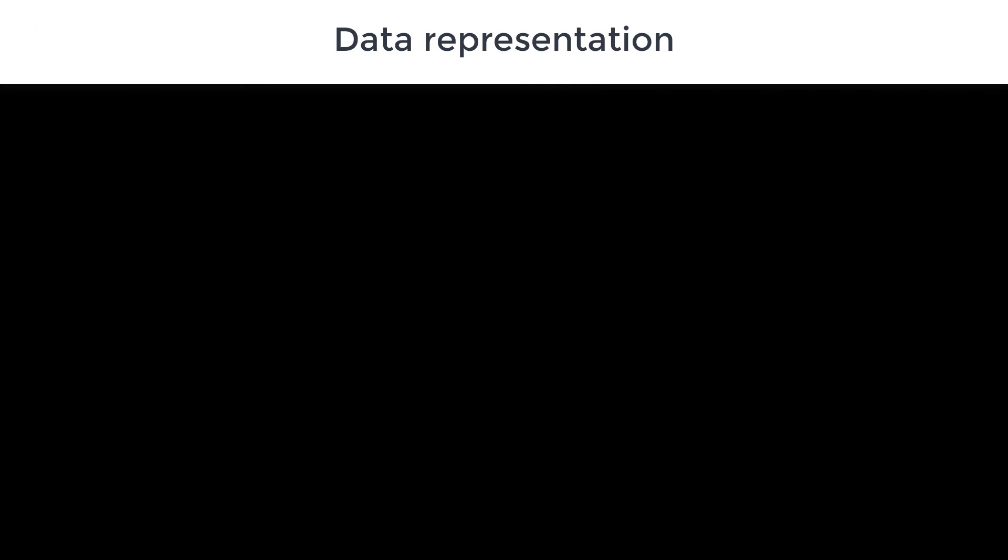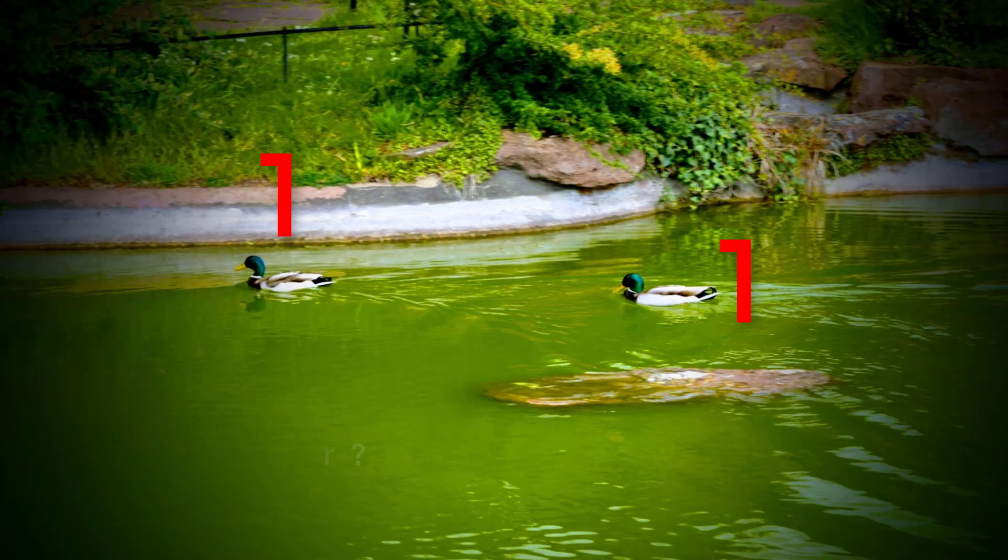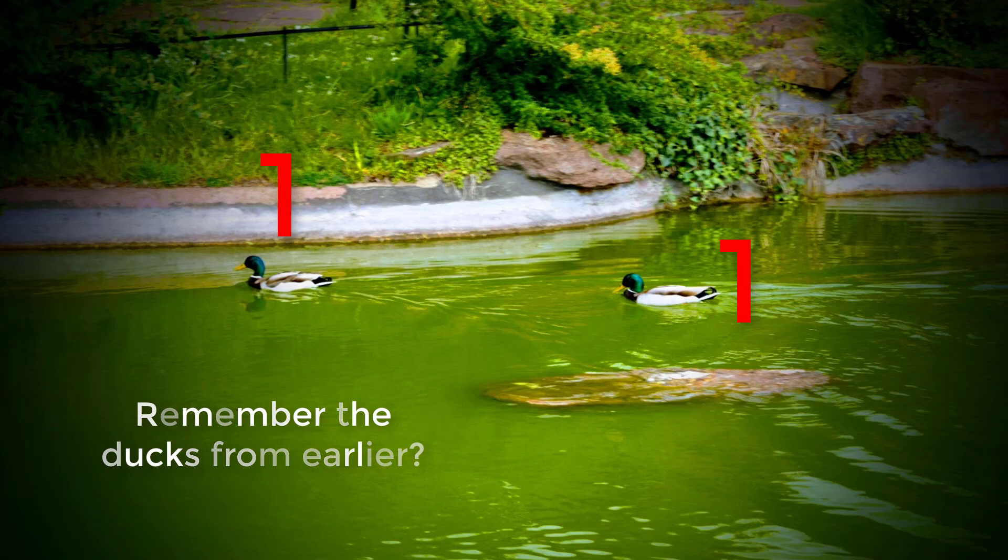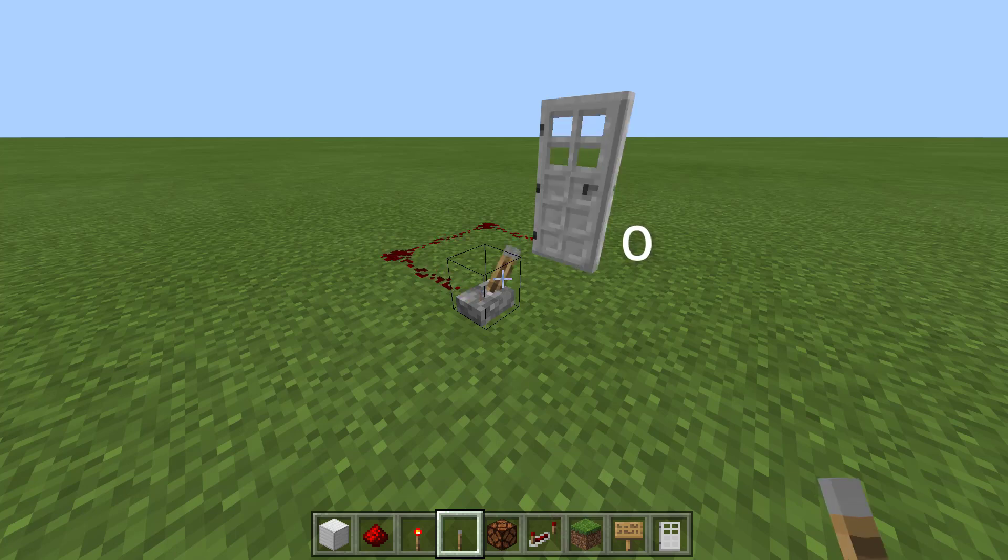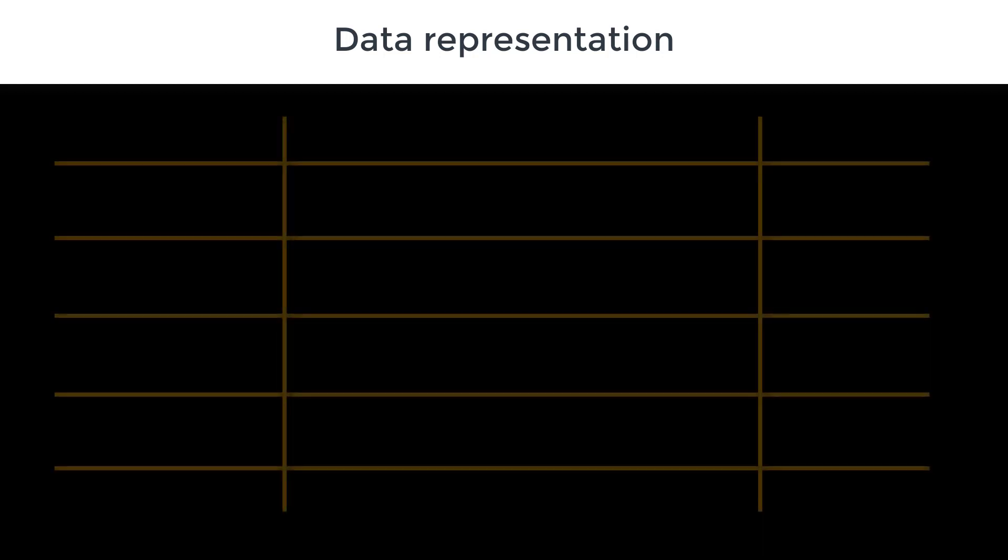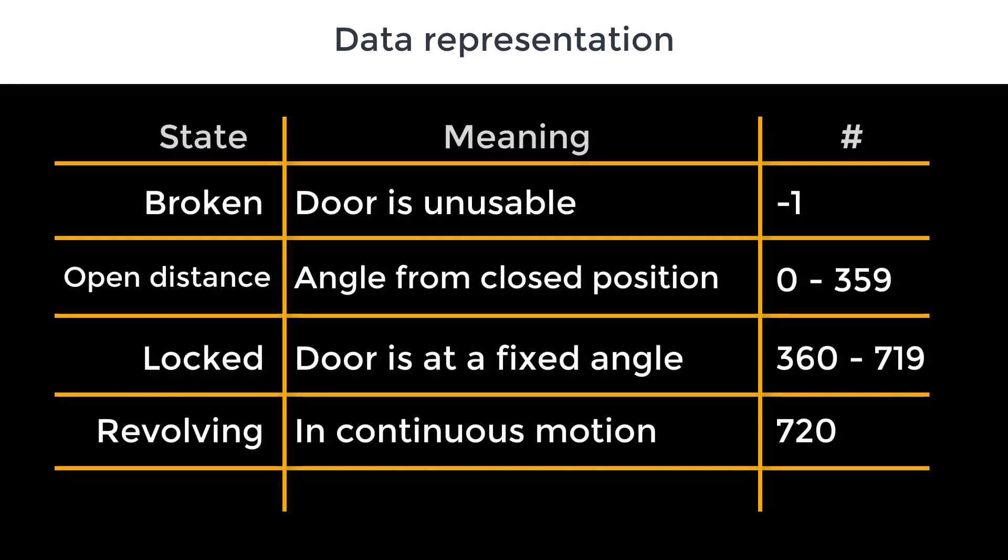Let's go back to data representation. We established that we can assign numbers different meanings, and we can even reuse numbers for multiple meanings. Let's take a look at a couple of examples. First, something simple, a door. At first glance, a door might have just two states, open and closed. We could say open is represented by the number 1, and closed by the number 0. However, doors can have more states than that. They might be locked, revolving, broken, or part way open or closed. So a second version of the door state might look something like this. We have the state of the door, the meaning of that state, and a number to represent it.